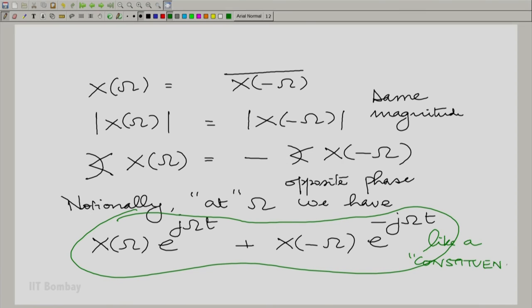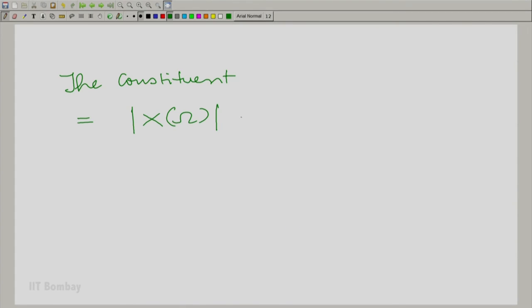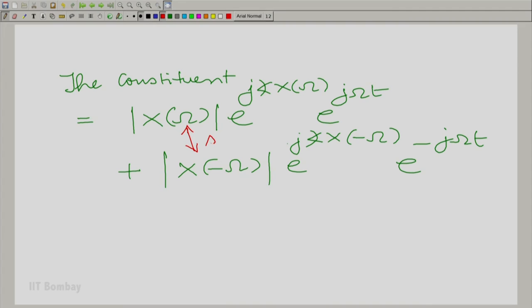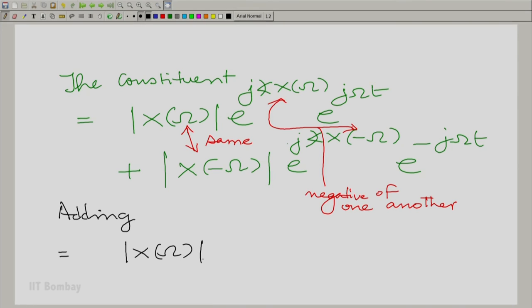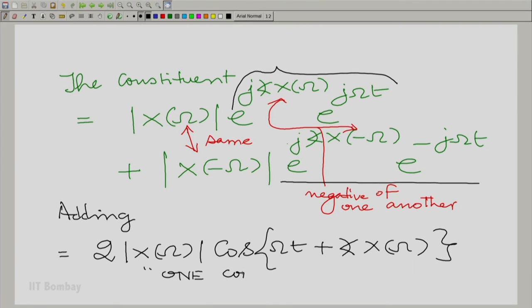Essentially, this is like a constituent here. If I expand it, the constituent looks like this. I know the relation between these. If I add these, I can easily simplify and get |X(ω)| times e^(jωt) times e^(j·angle[X(ω)]). The quantity and its complex conjugate added together gives you two times the real part, which is cosine(ωt + angle[X(ω)]). This is one constituent.